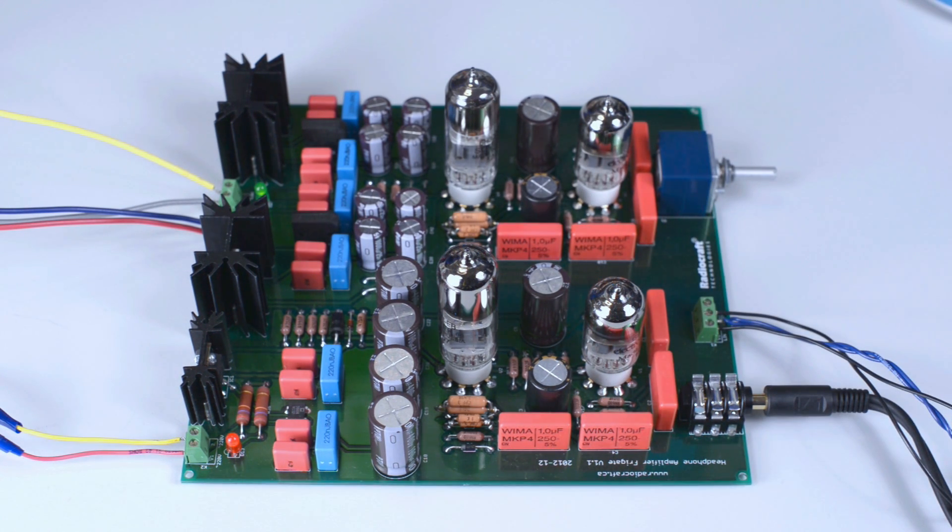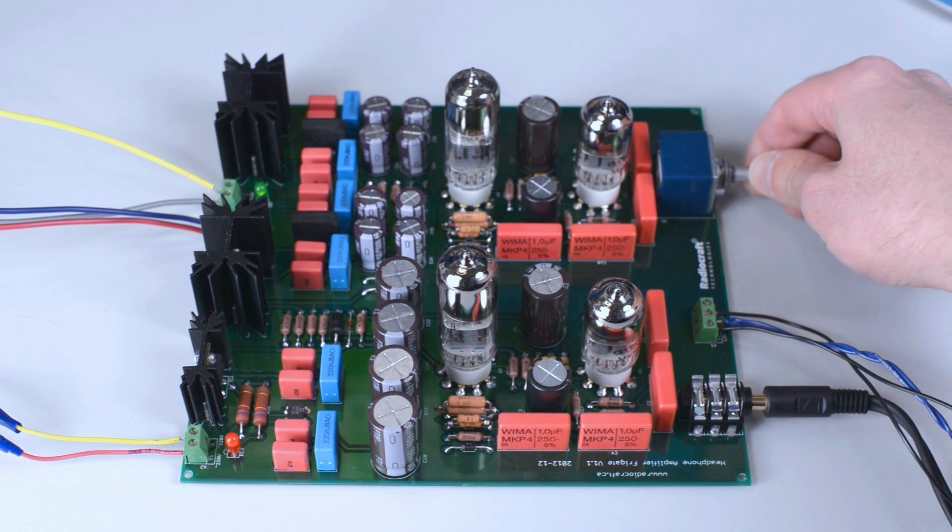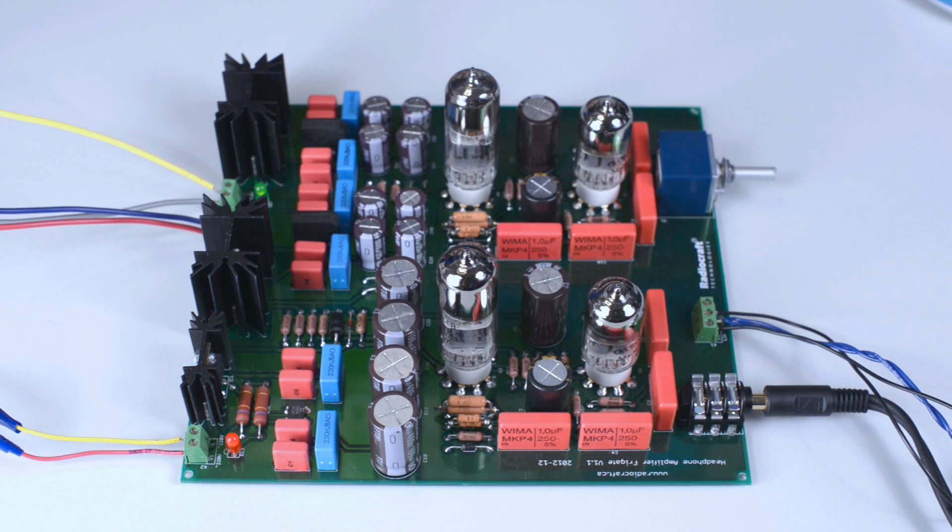This is the maximum volume produced by this headphone amplifier with Sennheiser 650. This is the minimum volume. Volume is zero. And volume is maximum again.